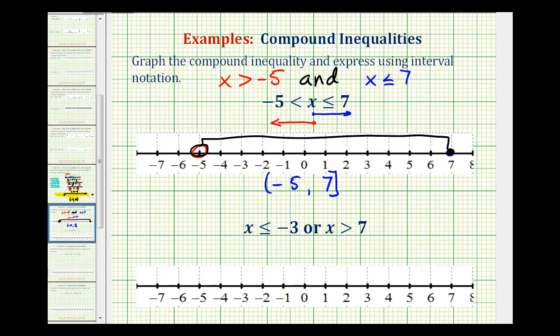So on this one, we can go straight to a graph. To graph x is less than or equal to negative three, this interval does include negative three, so we'll make a closed point on negative three. Arrow to the left. Or, x is greater than seven. So seven is not in this interval, so we make an open point on seven. And then for greater than seven, we make an arrow to the right.